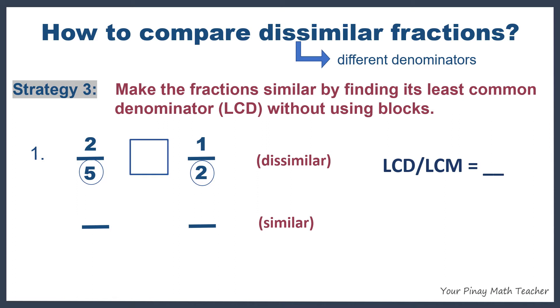By the way, multiples are products or results when you multiply a certain number by 1, 2, 3, 4, and so on. So the first few multiples of 5 are 5, 10, 15, 20, and so on. For 2, we have 2, 4, 6, 8, 10, and so on. Based on the list, our least common multiple is 10.